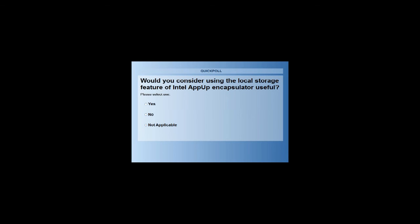This is our last poll: would you consider using the local storage feature of Intel App Up Encapsulator? Yes, no, or not applicable? Ujwal explained some good use cases — storing the state of a game, a checkpoint when moving to a different level, a high score. Outside of games, consider a media player where somebody pauses an audio file; when they relaunch the app, the state of where you were in that file could be saved.